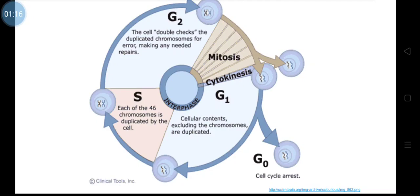The two daughter cells enter either into G0 phase, which is the cell cycle arrest phase where cells do not divide or grow in size — it is like a dormant stage where metabolic activity slows down. When there is a favorable environment, the G0 phase enters into G1 phase. G stands for gap.